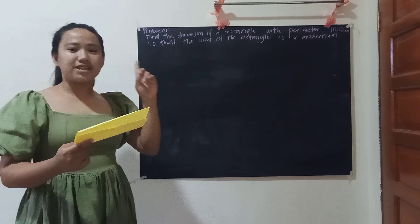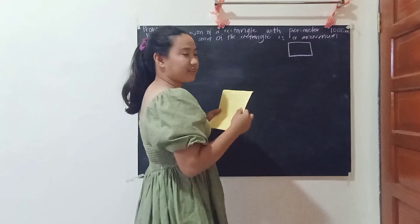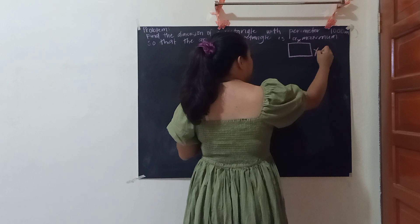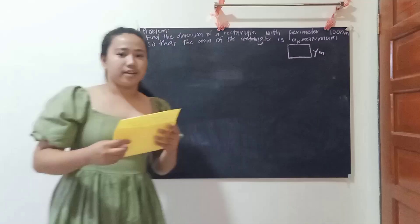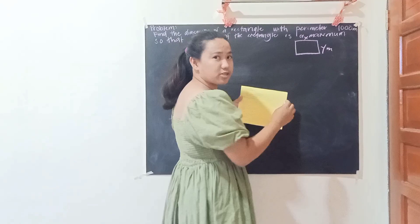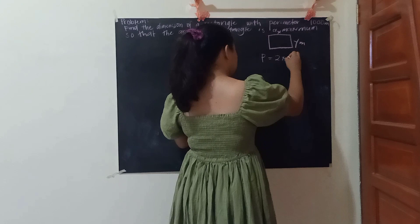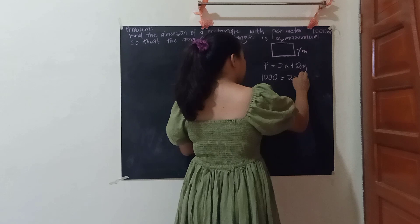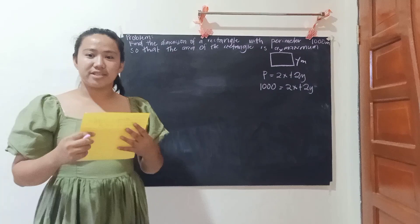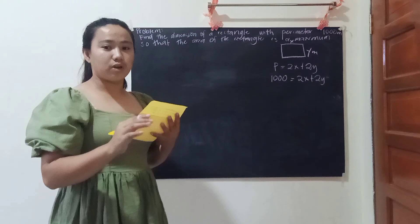Let the length of the rectangle be x meters and the width be y meters. This is the formula for solving the perimeter of a rectangle: P equals 2x plus 2y. So 1000 equals 2x plus 2y. Hence, we must identify the value of y using this formula.